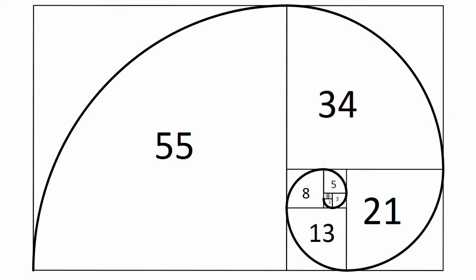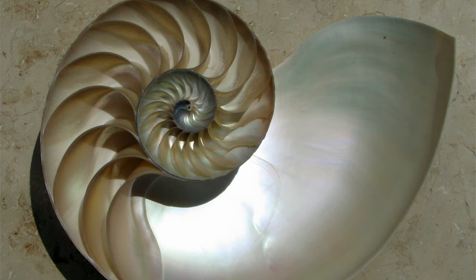Now although it seems like a fairly arbitrary idea, it's actually observable in many places in nature. For example, let's take a shell. If you look at this shell and you compare it to a Fibonacci spiral, you'll see that the shell follows the spiral perfectly.